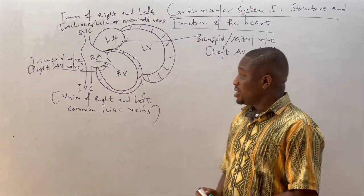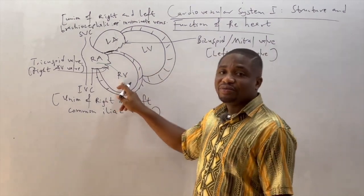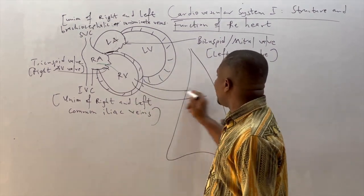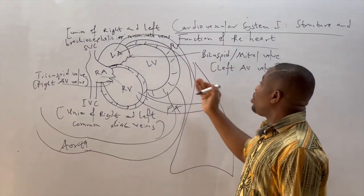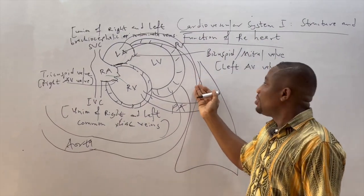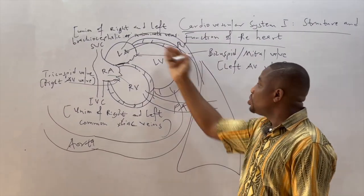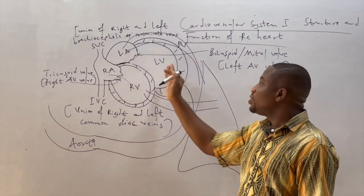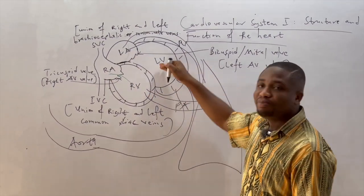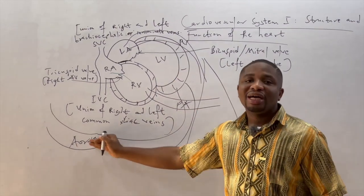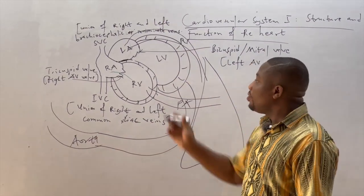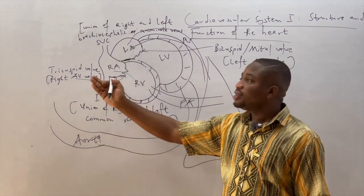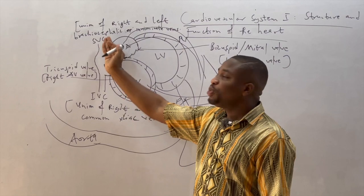Looking at the ventricles: once they collect their blood, the right ventricle drains the blood into the lungs through the pulmonary artery. The pulmonary vein drains oxygenated blood from the lungs into the left atrium, which drains it via the mitral valve into the left ventricle. The left ventricle then pumps the blood through the aorta into the systemic circulation.